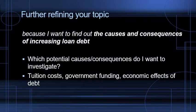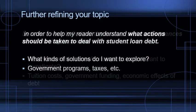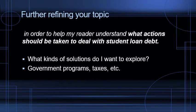Then the question: what is it that we want to find out? What are the causes and consequences of increasing loan debt? Which potential causes and consequences do I want to investigate? Maybe tuition costs, maybe government funding — maybe those are the economic consequences I want to figure out. And if our broad purpose was what actions should be taken to deal with student loan debt, what kinds of solutions do I want to explore? Maybe government programs or taxes. As we research and read and write more, we refine our topic from something very broad like student loans to how changes in government funding have led to increases in student loan debt and what programs we can implement to reduce it.